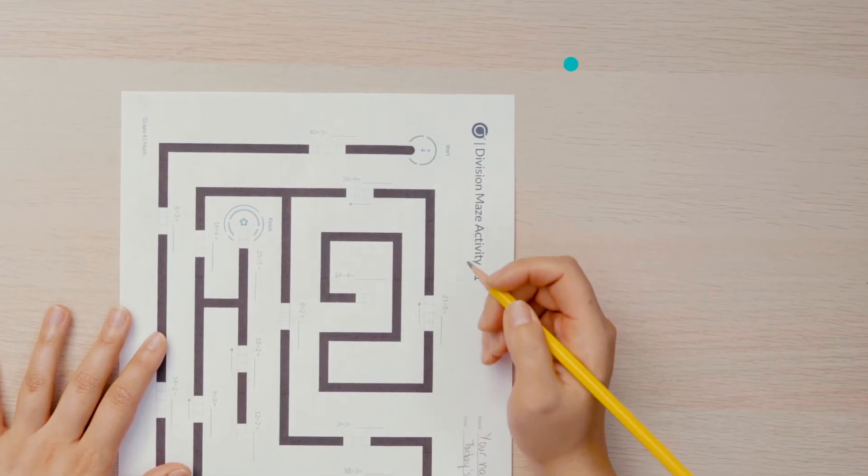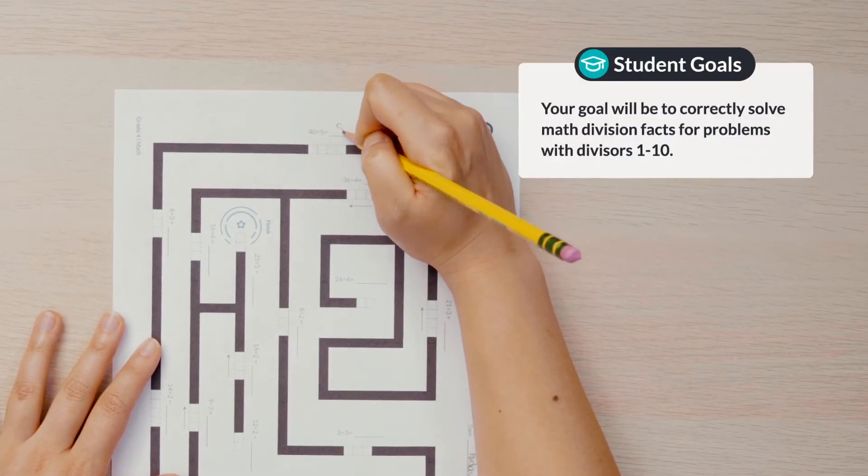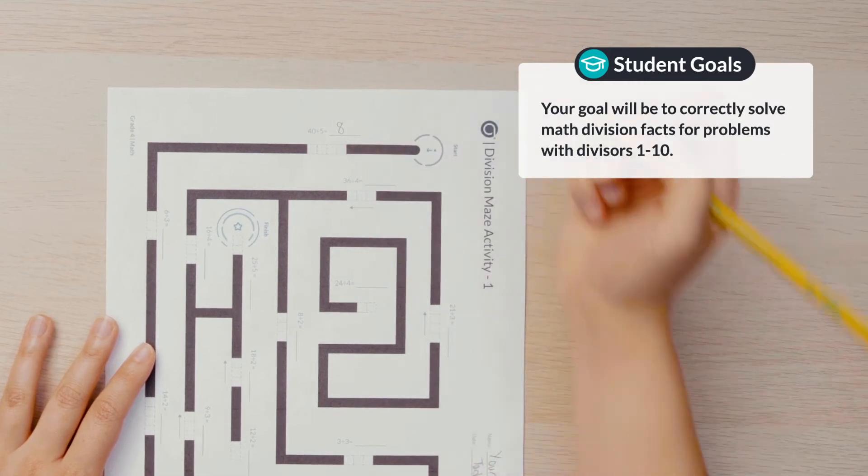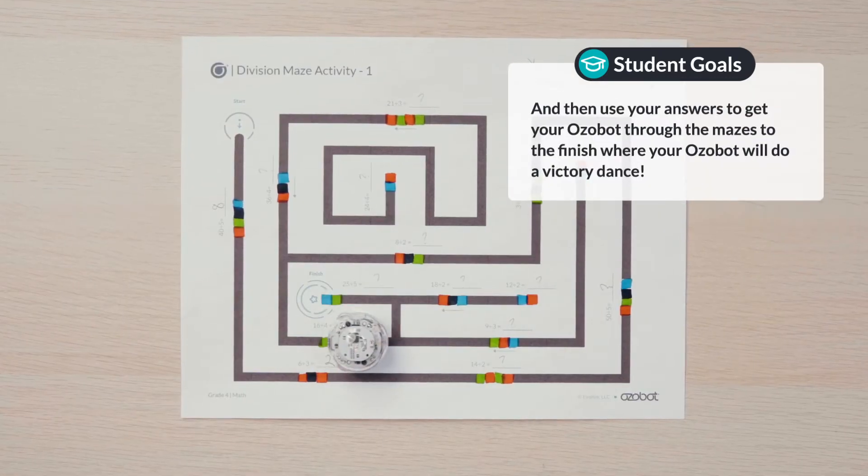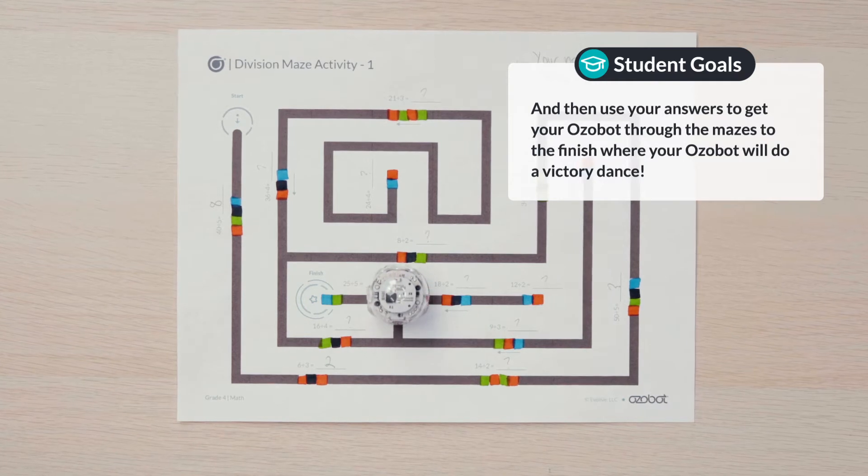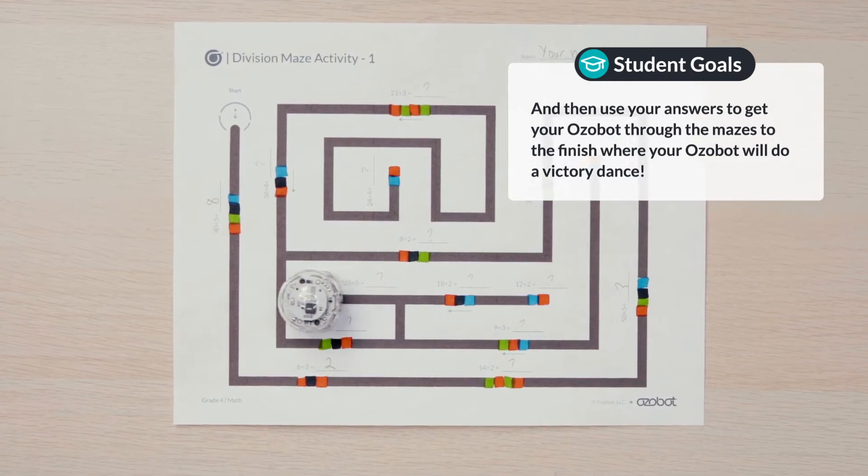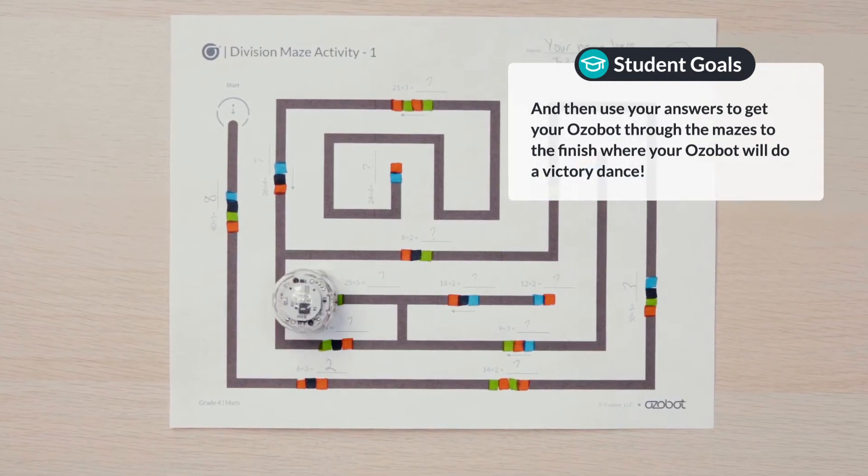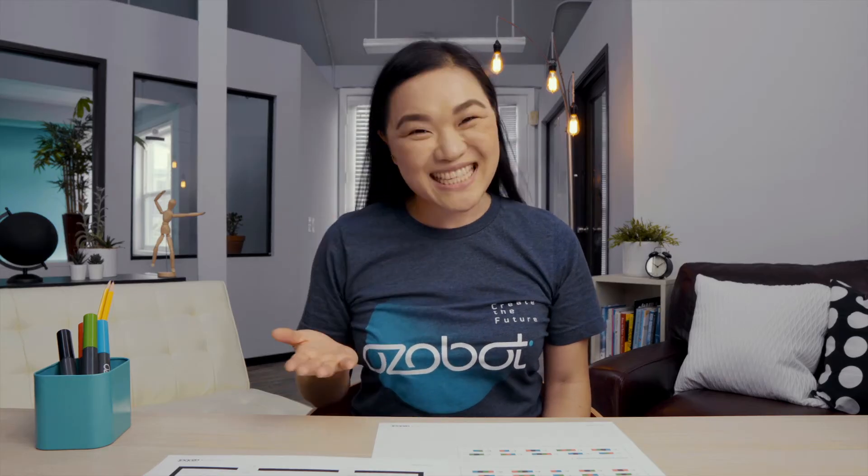Your goal will be to correctly solve math division facts for problems with divisors 1 through 10. Then you will use your answers to get your Ozobot through the mazes to the finish where your Ozobot will do a victory dance. Put on your math cap and let's get started.